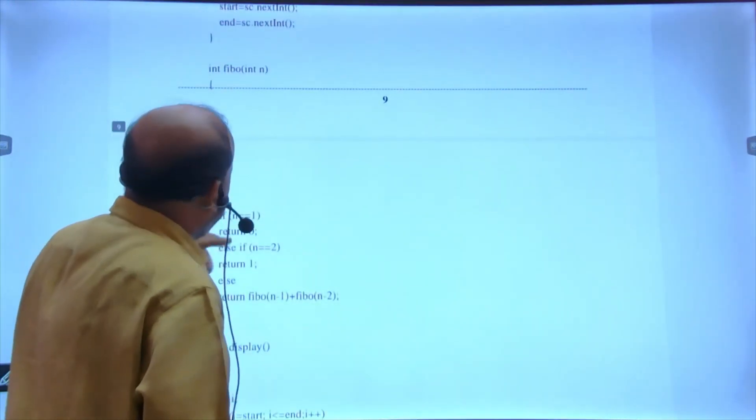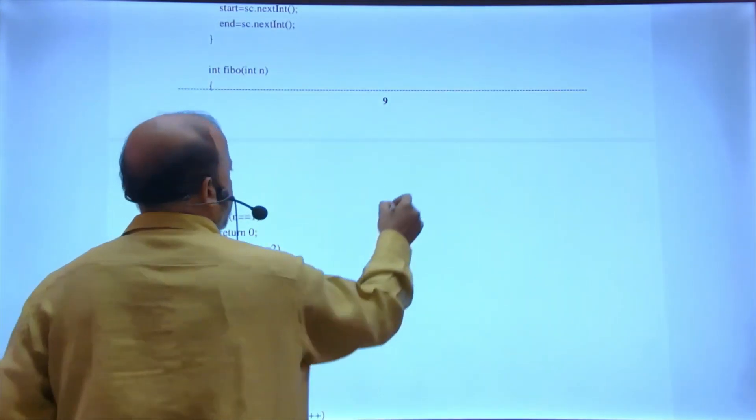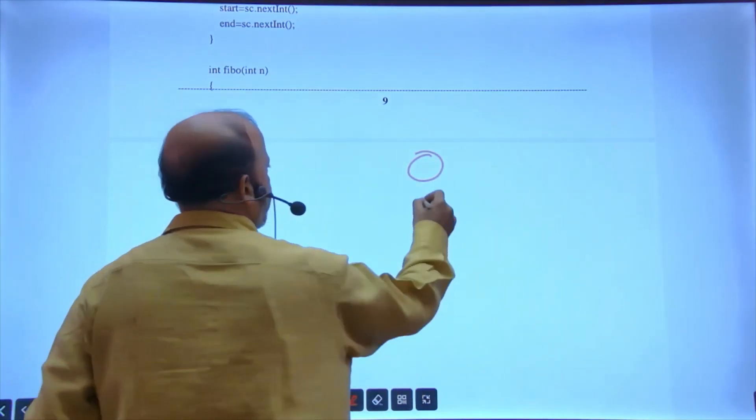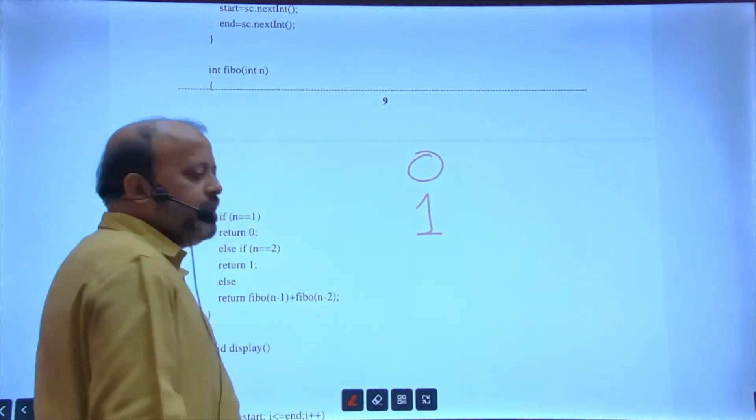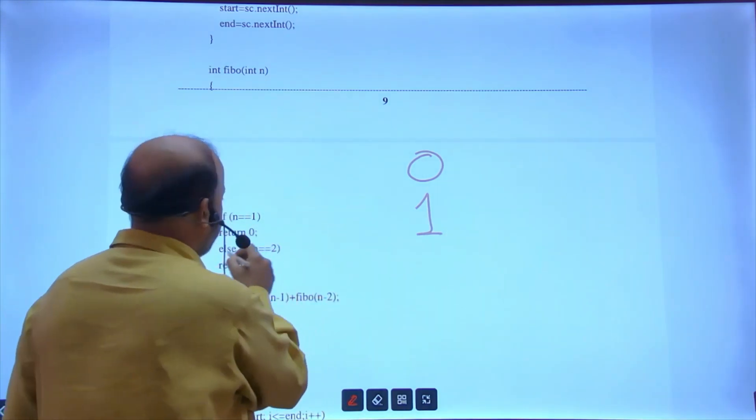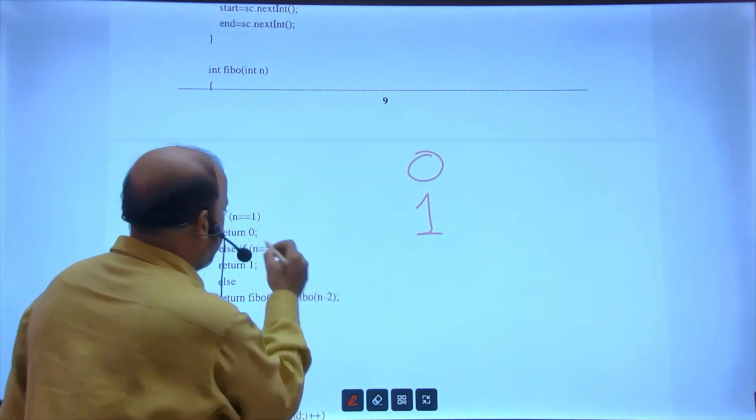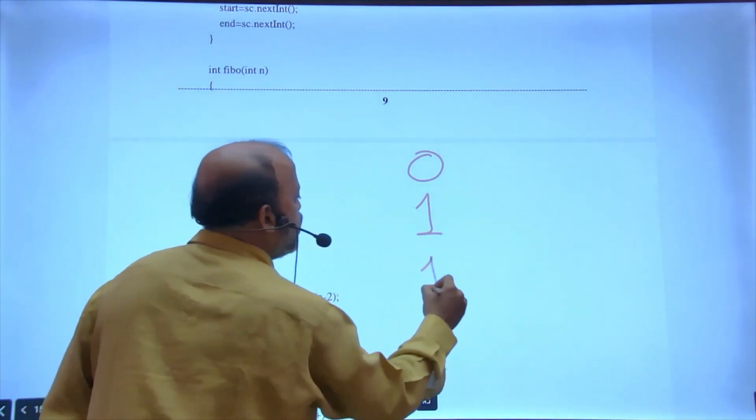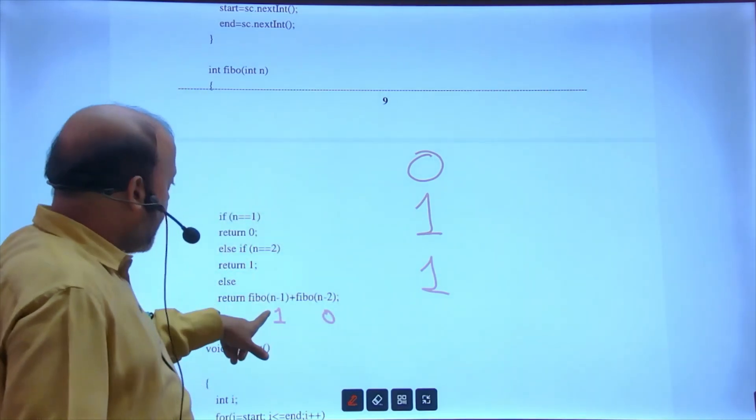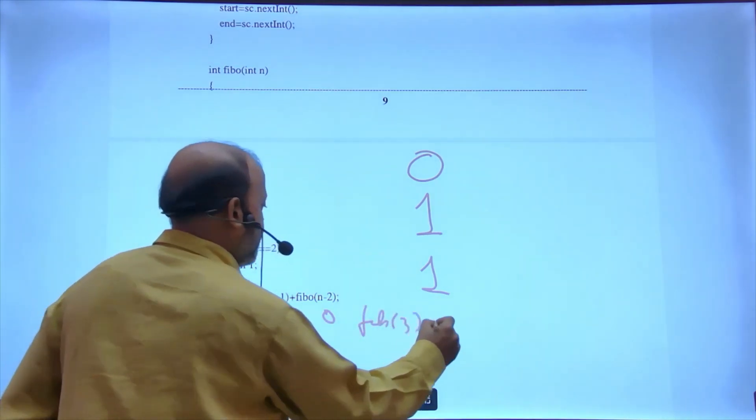Till instance variable, constructor, read - not needed. Here, when n is one, you're returning zero. You're getting this zero. n is two, you're getting one. When n is three, fib(2) is called. fib(2) gives one, fib(1) gives zero, so one plus zero, you're getting one.